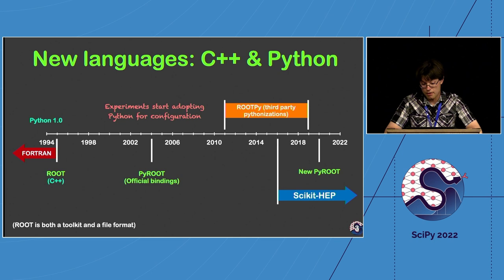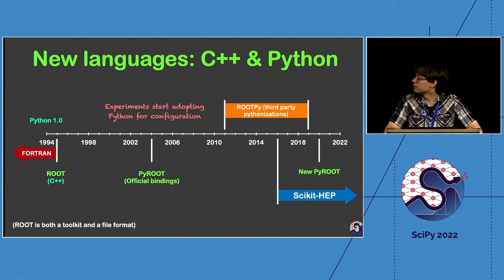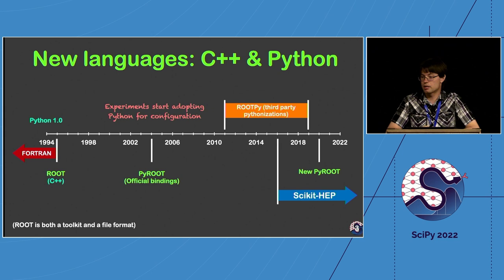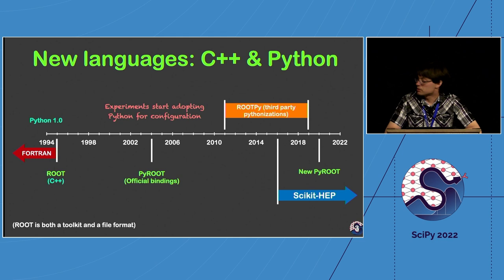About 10 years later, PyROOT was introduced as the official bindings to ROOT. But this didn't really fill all the needs for a Python-centric ecosystem. As the scientific ecosystem started building around Python, there were various attempts to combine the two worlds and take advantage of NumPy and other tools. Some third-party work emerged, and then in 2016 scikit-hep was introduced.